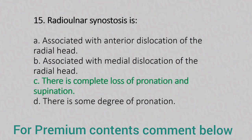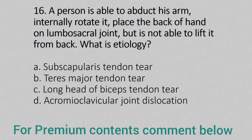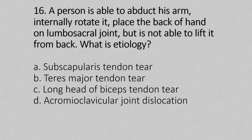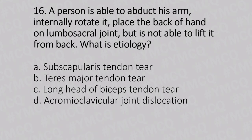Now let's move to question number 16. A person is able to abduct the arm, internally rotate it, place the back of the hand on the lumbosacral joint but is not able to lift it from the back. What is the etiology? Option A: subscapularis tendon tear. Option B: teres major tendon tear. Option C: long head of biceps tendon tear. Option D: acromioclavicular joint dislocation. And the answer is Option A, subscapularis tendon tear.